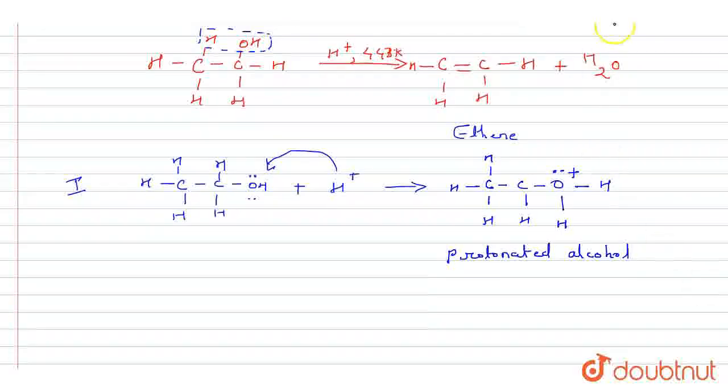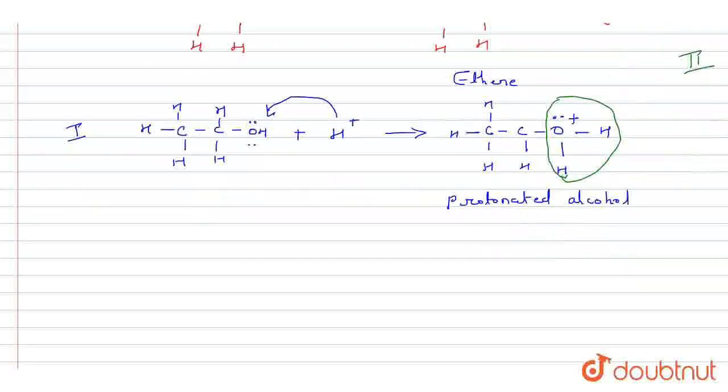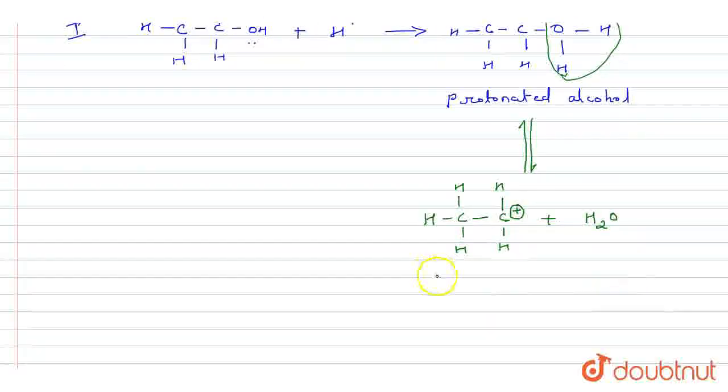In next step, the protonated alcohol loses a water molecule to form carbocation. In second step, water molecule gets lost to form ethyl carbocation. This is the structure for ethyl carbocation. Here we have H's, and in this case plus charge is present and water molecule gets removed from this position.